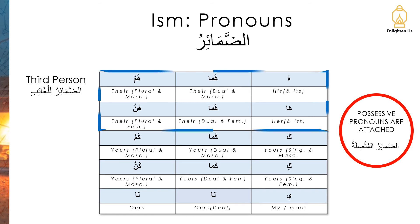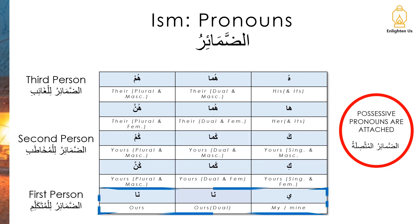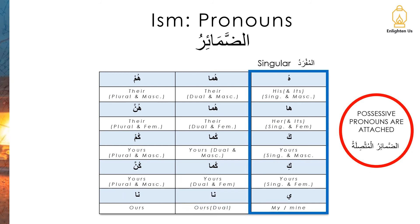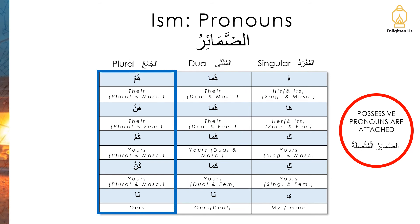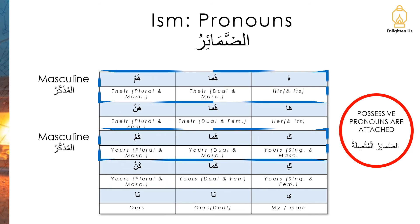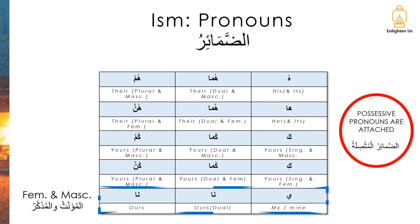Again, we have a similar separation. The first and second rows are your third person, and the third and fourth rows are your second person. The very bottom row is the first person. It's a similar separation in terms of numbers: the first column is for the مفرد, the singular; the second column is for the مثنى; and the last column is for the جمع, the plural. And again, for gender, we have the same separation — the masculine rows and the feminine rows — and for the first person, we use the same pronouns for feminine and masculine.